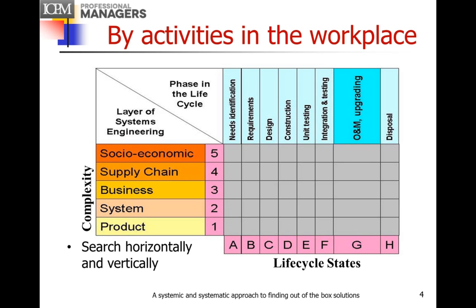By activity in the workplace, this is the HKMF, and the vertical dimension deals with the level of complexity. It starts with a product, goes up to the system layer, the business or system of systems layer, and so on. This is Derek Hitchens' 5-layer model, and you can find it on his website. The horizontal dimension is the state of the life cycle when systems are being developed, and all work, all projects, can be mapped into this framework.